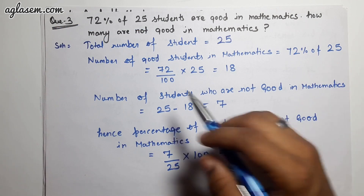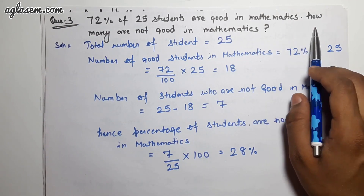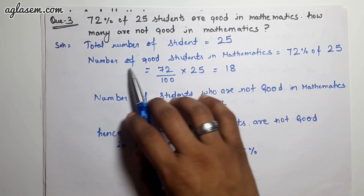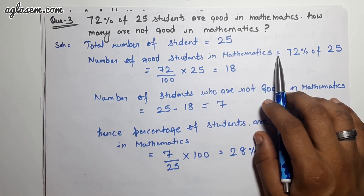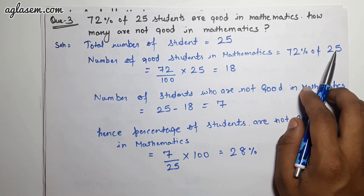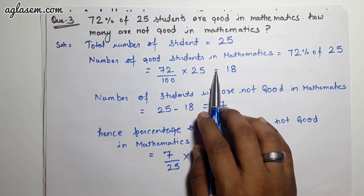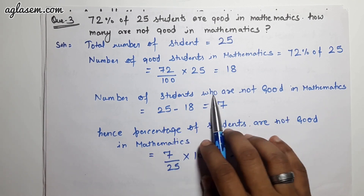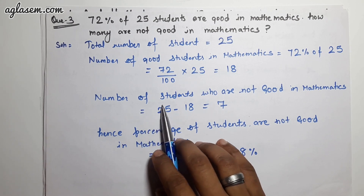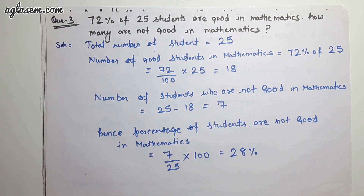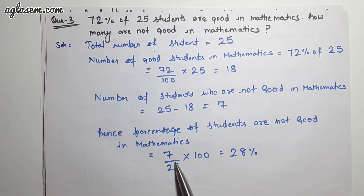Question 3: 72% of 25 students are good in mathematics. How many are not good? Total students = 25. Good students = 72% of 25 = (72/100) × 25 = 18. Students not good = 25 − 18 = 7. Percentage not good = (7/25) × 100 = 28%.